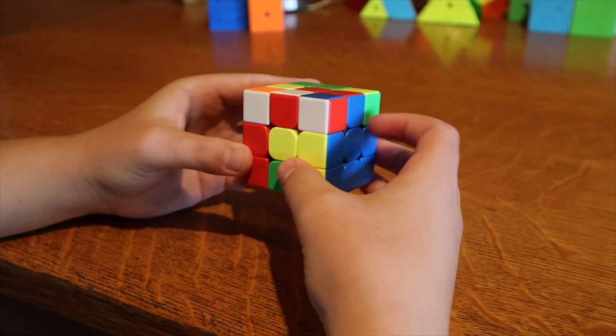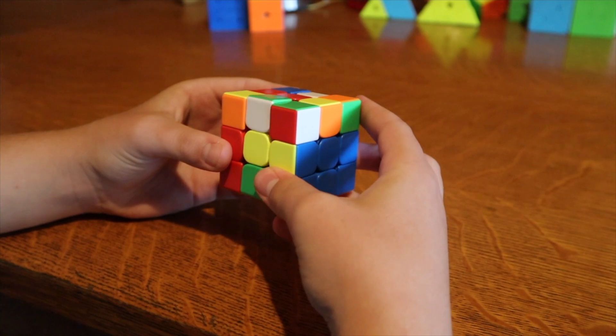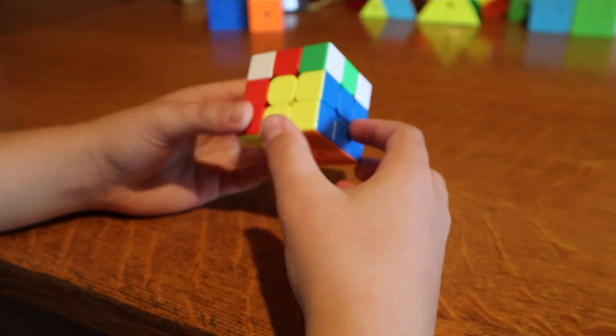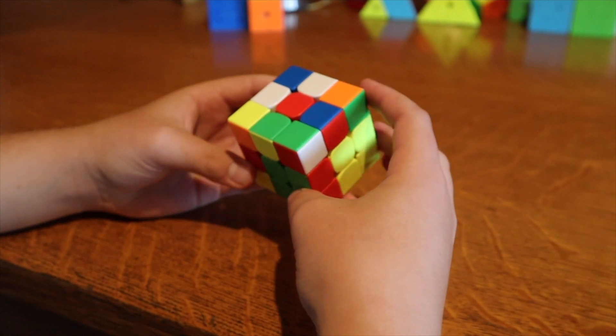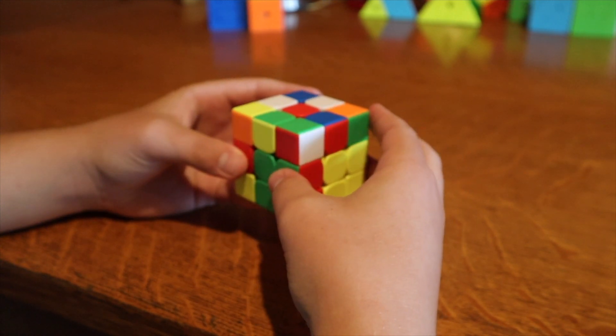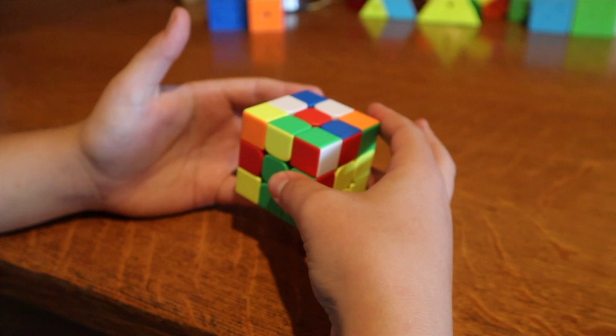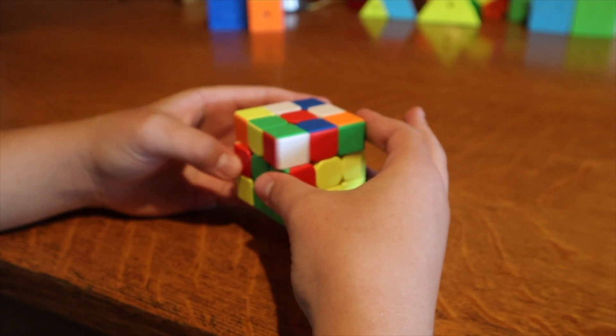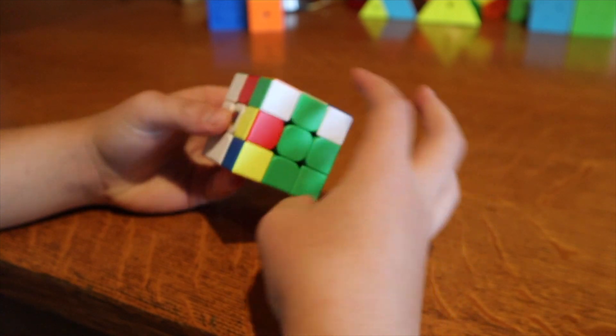So next there were just two more F2L pairs to solve. It took me a while to recognize them because I almost never do orange cross. I'm terrible at it because I'm not color neutral. But I did see that this was the next one.